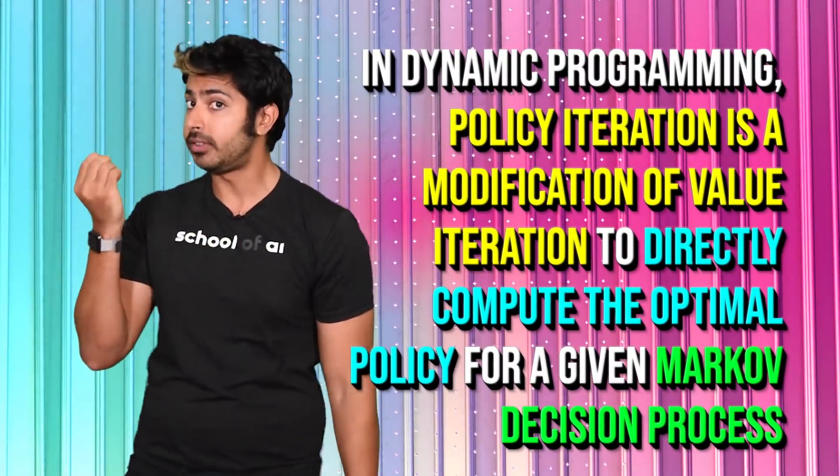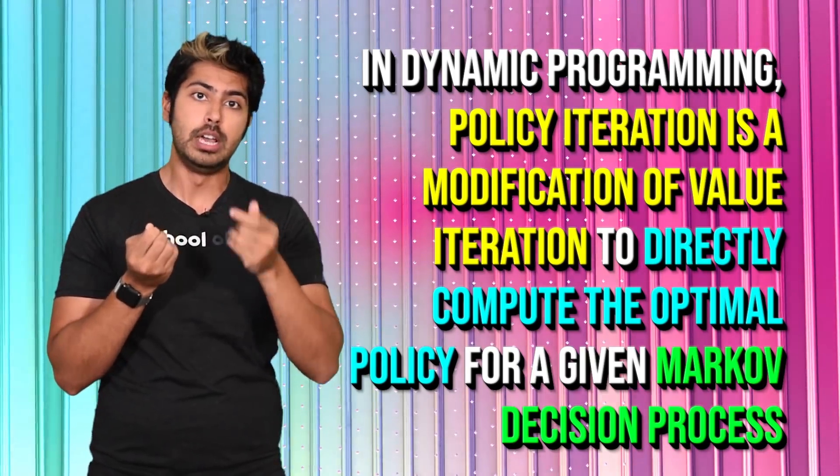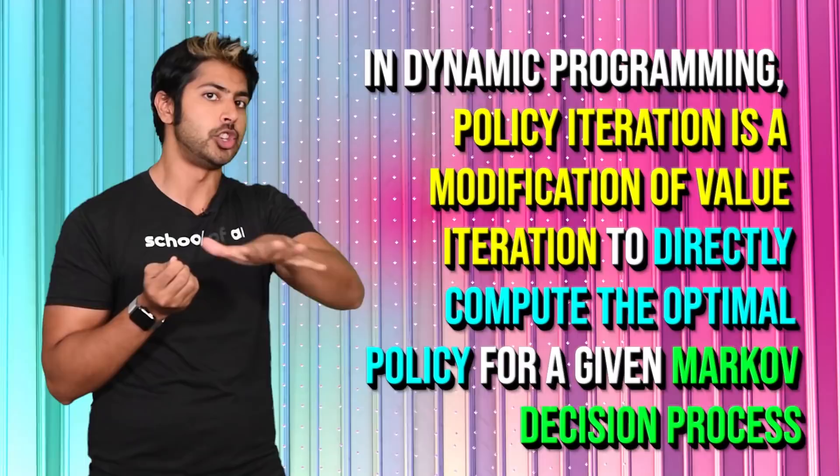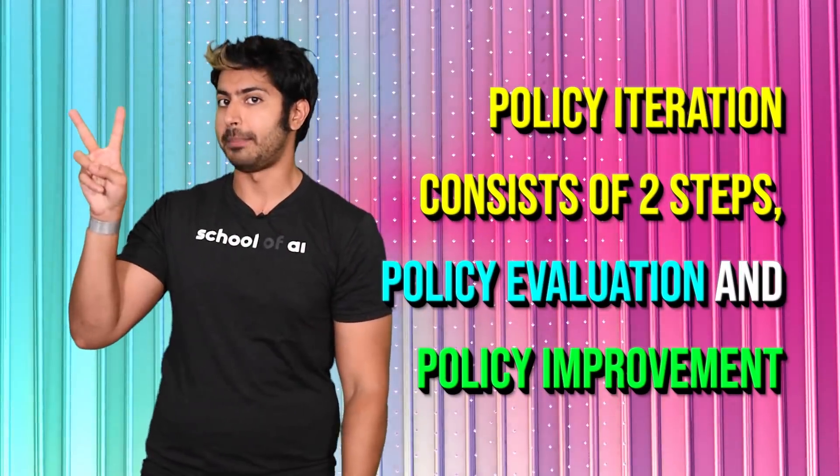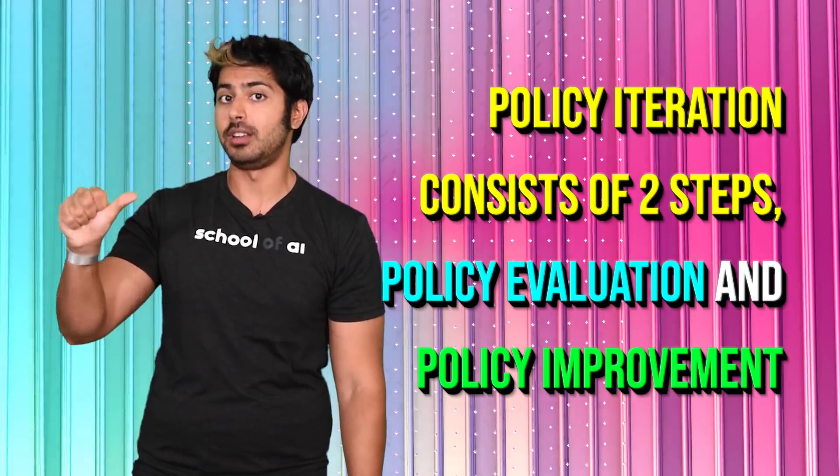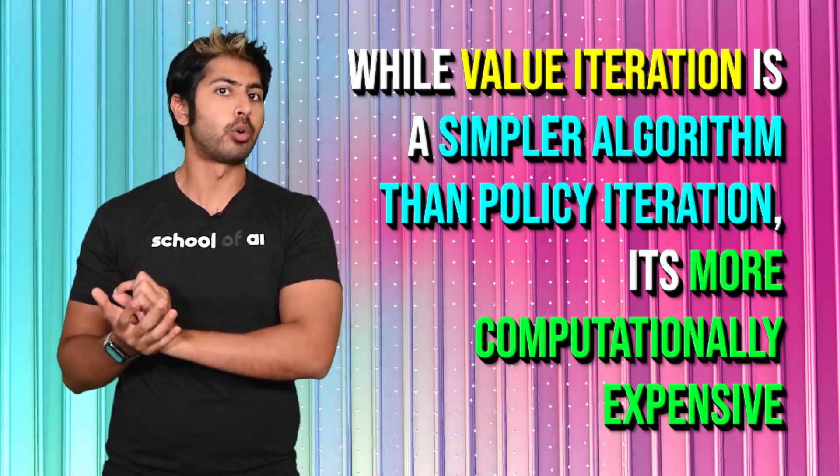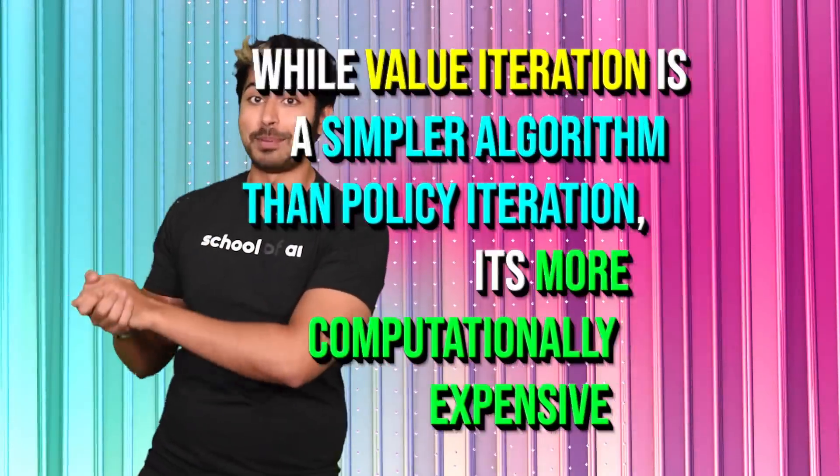Three closing points here. In dynamic programming, policy iteration is a modification of value iteration to directly compute the optimal policy for a given Markov decision process. Policy iteration consists of two steps, policy evaluation and policy improvement. And while value iteration is a simpler algorithm than policy iteration, it's more computationally expensive.